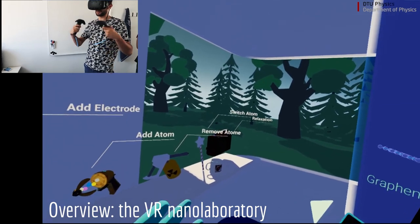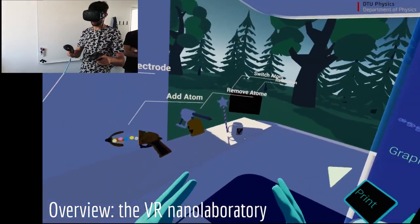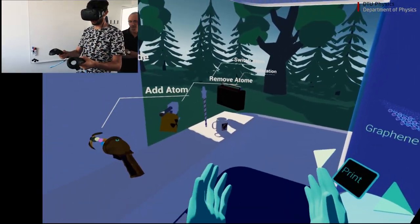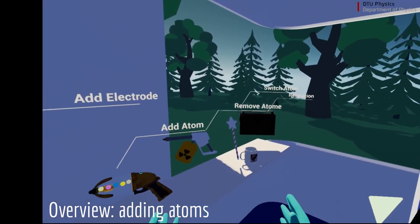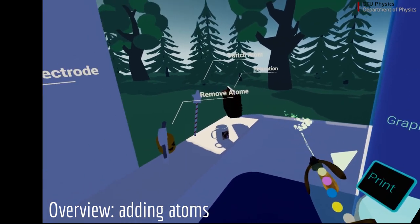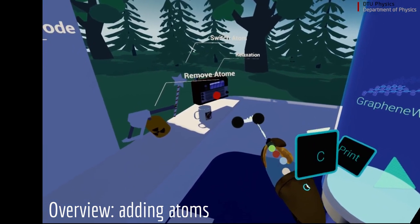The idea is to have this space in which it feels natural to work in. To create a new molecule, I will start by adding atoms. So I just grab the add atom tool and then I can start adding atoms.